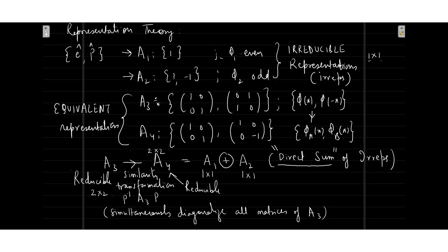One-cross-one is written as the irreducible representation because it cannot be reduced to a lesser number. These representations A1 and A2 turned out to be what we call irreducible representations — written as 'irreps' in all books to reduce text. Then we tried to make a higher-dimensional representation by choosing two functions, phi X and phi minus X, such that the representation of the E operator turned out to be a two-cross-two matrix, and P also turns out to be a two-cross-two matrix.